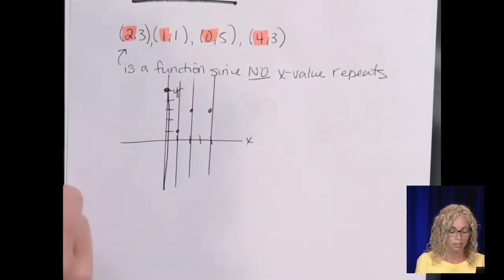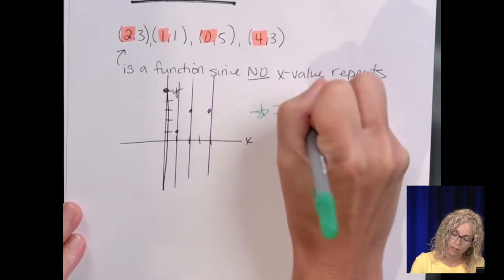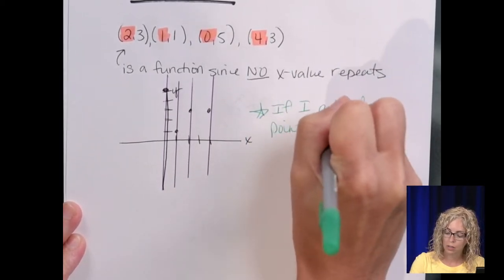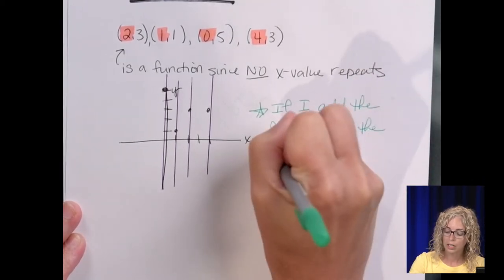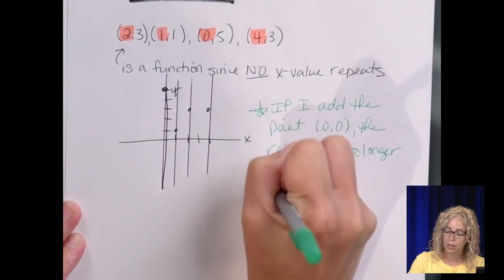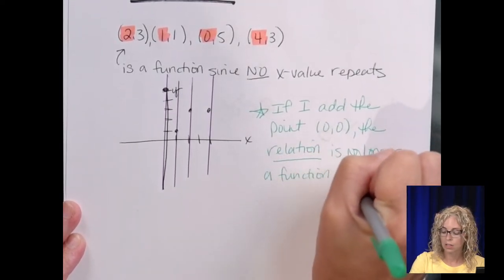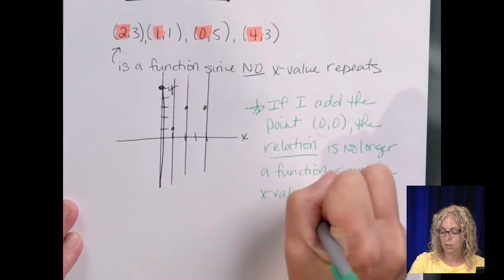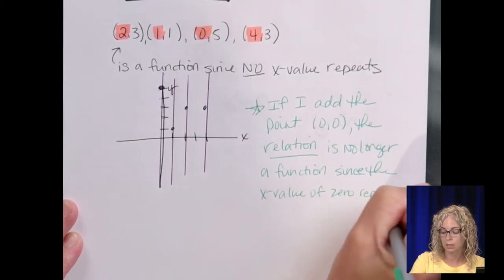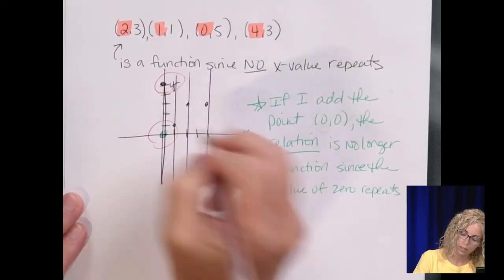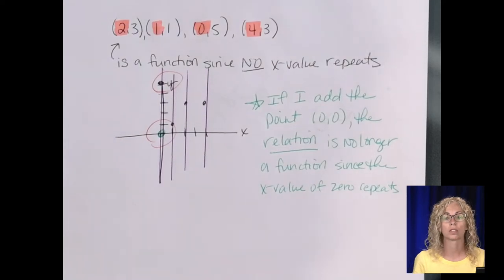If we were to add the point (0,0), the relation, and the relation is just a set of points, the relation is no longer a function since the x-value of 0 repeats. So (0,0) would be right here, and you could see the issue is right here. This relation fails the vertical line test.